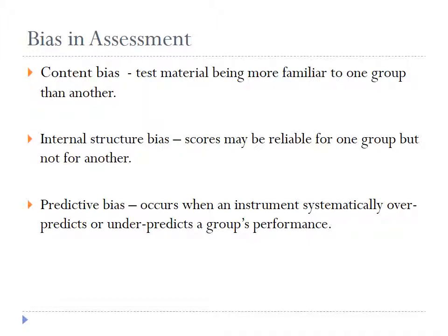Sources of bias could come from many different areas. There could be content bias, where the test material is more familiar to one group than another. There could be internal structural bias, where the scoring of the instrument is more reliable for one group but not the other. And predictive bias, where the instrument over-predicts or under-predicts a group's performance. There are many who argue that an exam like the GRE has very little predictive ability — the correlation between scores on the GRE and actual grades in a graduate program is very low. For a test designed to predict performance in graduate school, it really does a poor job.